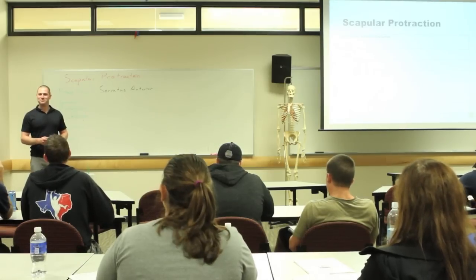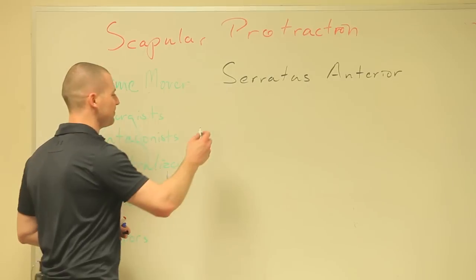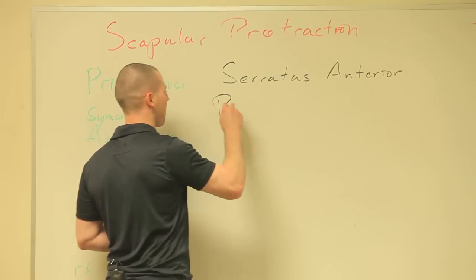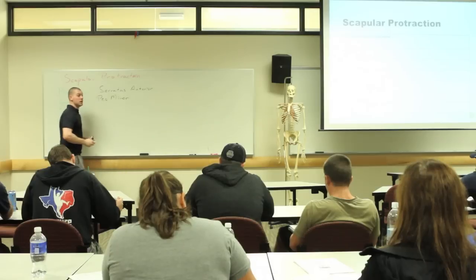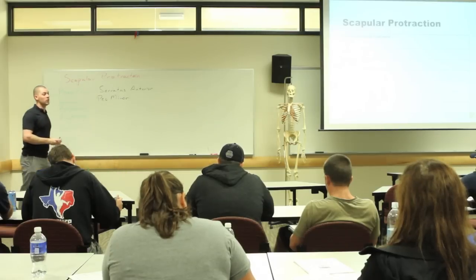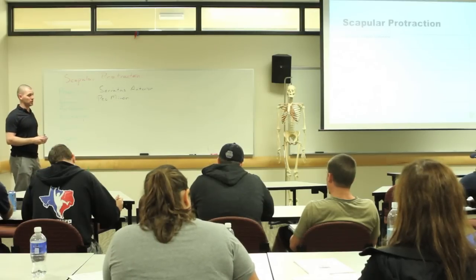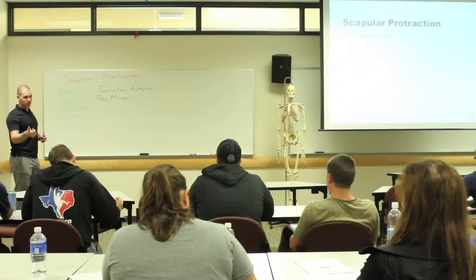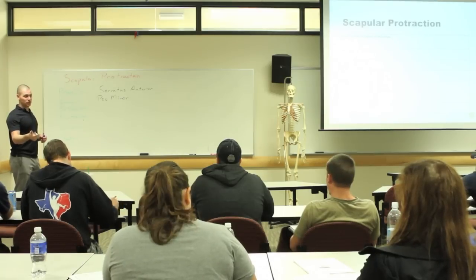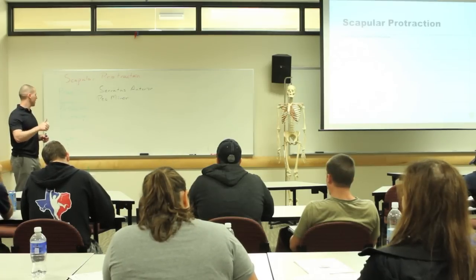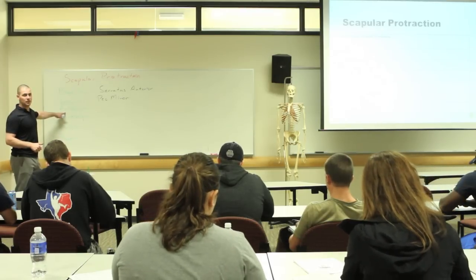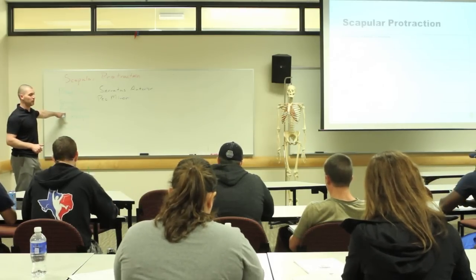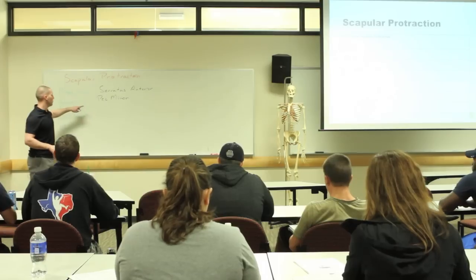Synergists: pec minor. Remember, we're talking about protraction — these muscles have to cross from axial, the rib cage, to the scapula or the spine of the scapula. Antagonists are going to be all the muscles that do retraction. So what are my retractors?